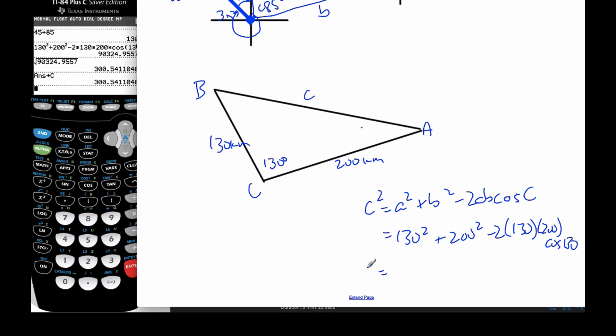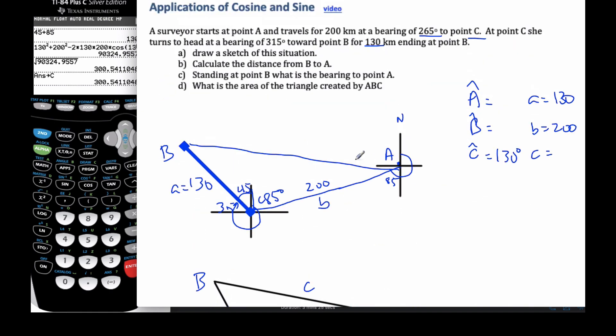And so c, I know, is 300.54. So to three significant figures is 301 kilometers. So the first scenario, 301 kilometers, this is 301.